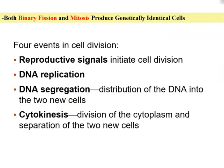Binary fission and mitosis are both regulated by certain major factors. First, they both need to receive reproductive signals to initiate cell division. Then DNA replication happens, and the DNA needs to be separated and distributed into two different cells. Most of the time this is followed by cytokinesis — the division of the cytoplasm — to separate the two new daughter cells that result.